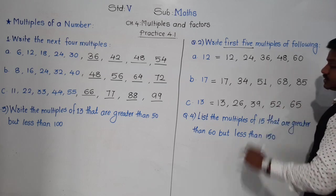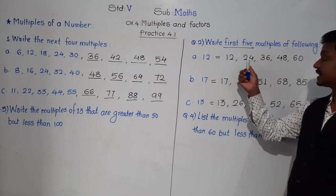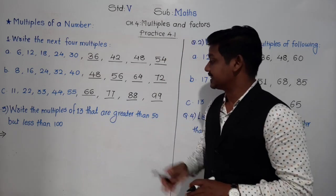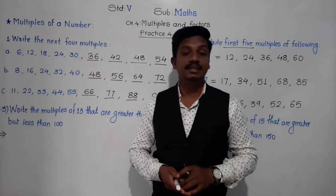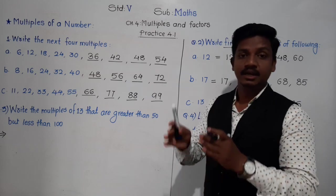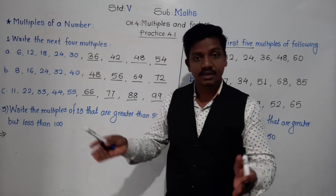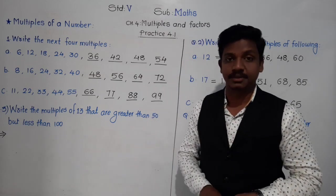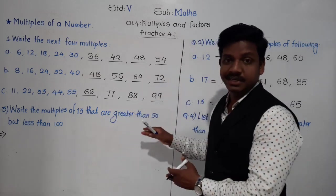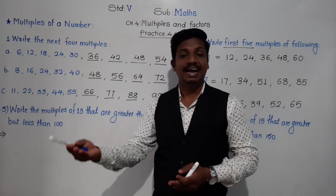These are the first 5 multiples of 13. Remember — don't forget to write the first multiple; don't start from the second. Question 3: Write the multiples of 13 that are greater than 50 but less than 100. We have to write multiples of 13 — but specifically those greater than 50 and less than 100.